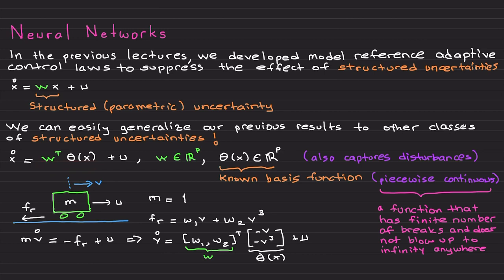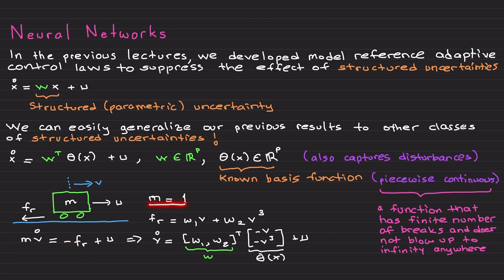This vector form of structured uncertainties — by the way, in some books and reports these are also called parametric uncertainties — can be motivated with a simple example. Consider a simple mass moving along a road subject to friction. This is the velocity of the cart, this is the control signal applied to the system, and from Newton's second law, mass times acceleration equals the control signal minus the friction force. Let's assume mass is one kilogram and friction has a structure that you don't know.